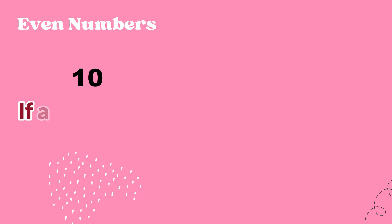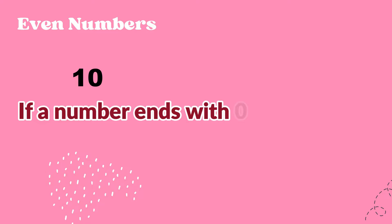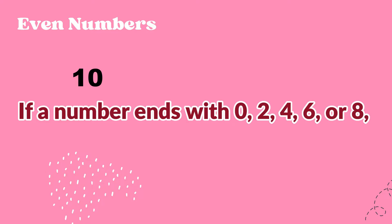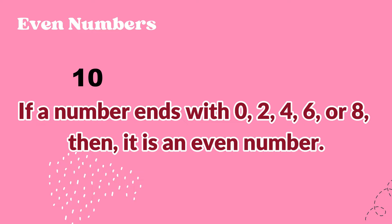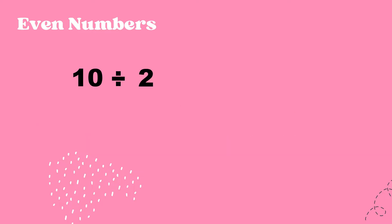It is said that if a number ends with zero, two, four, six, or eight, then it is an even number. And if we divide it by two, the remainder is zero. Ten divided by two is equal to five, and the remainder is zero.